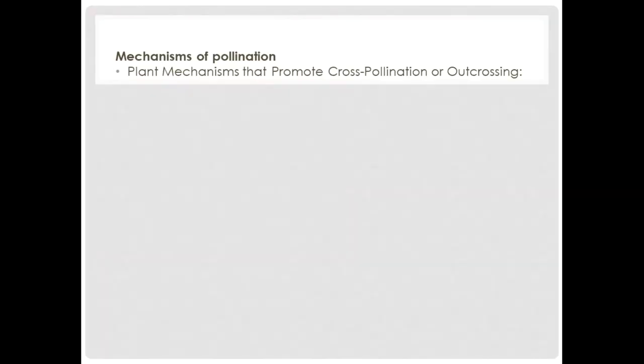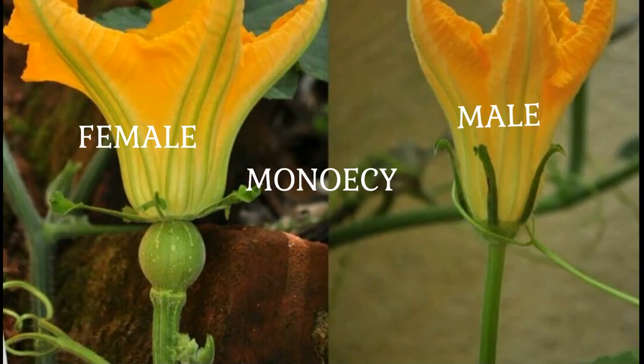Now let's take a look at mechanisms that promote cross-pollination or outcrossing in plants. First of all we have monoecy, or monoecious plants. Monoecious plants have separate male parts — the stamen — and female parts on two separate flowers in order to eliminate intra-floral pollination and favor outcrossing. In monoecy, both male and female flowers are on the same hermaphrodite plants.